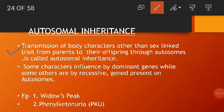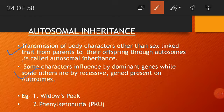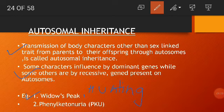These traits are called autosomal-linked traits. Some characters are influenced by dominant genes while some are influenced by recessive genes present on the autosomes. For example, autosomal dominant traits include widow's peak and Huntington's disease.